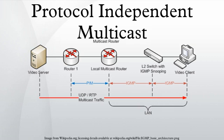Protocol Independent Multicast is a family of multicast routing protocols for Internet protocol networks that provide one-to-many and many-to-many distribution of data over a LAN or the Internet. It is termed protocol independent because PIM does not include its own topology discovery mechanism, but instead uses routing information supplied by other routing protocols.